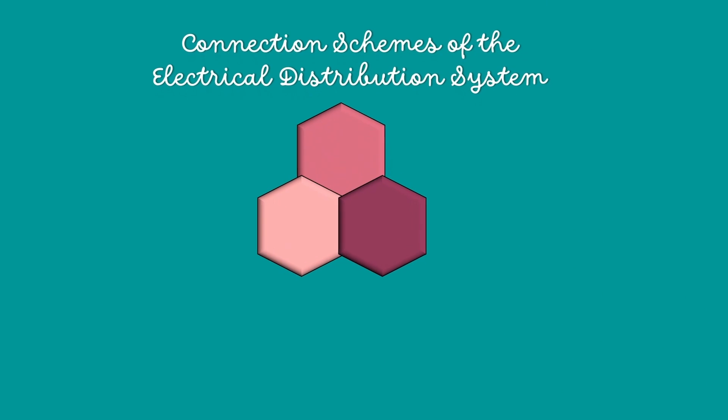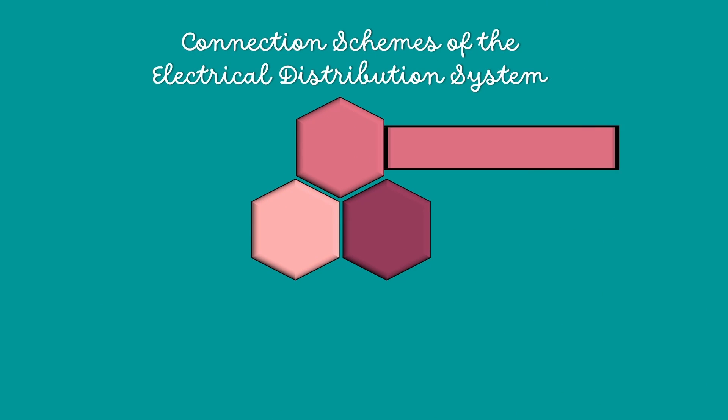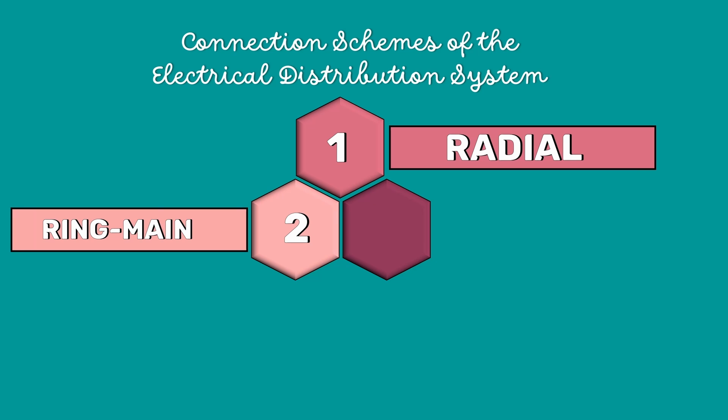In general, there are three main connection systems: the radial system, ring main system, and interconnected system.